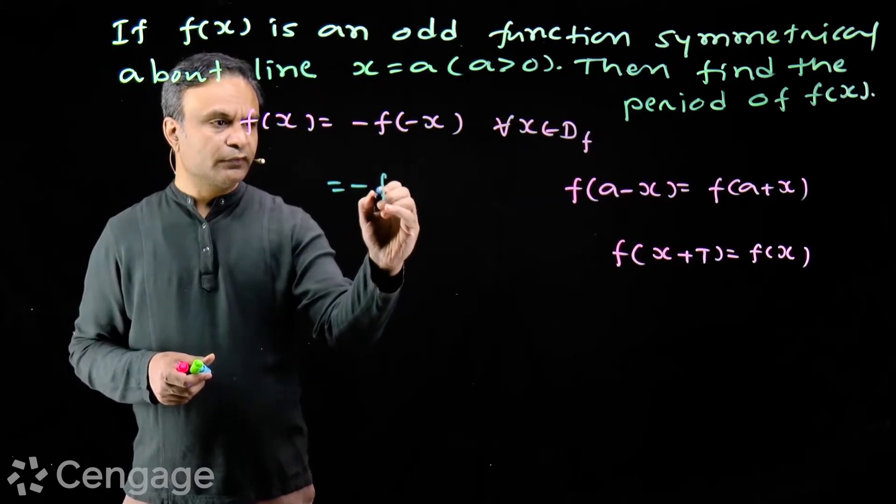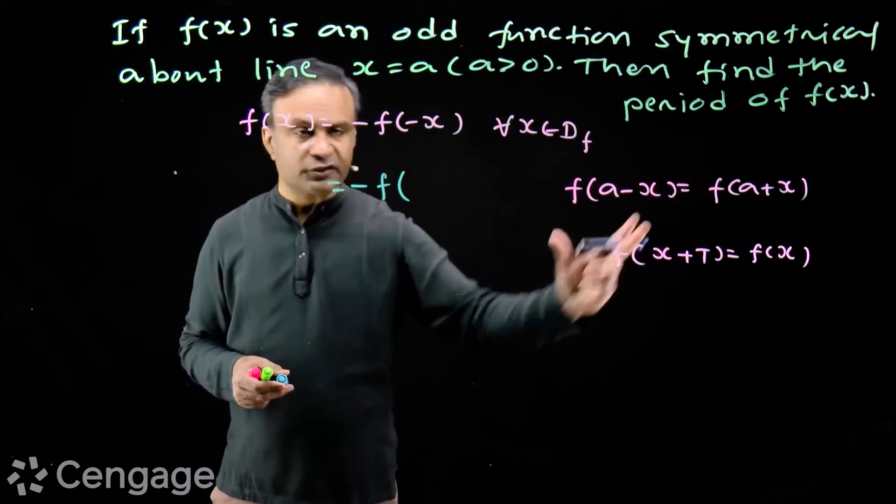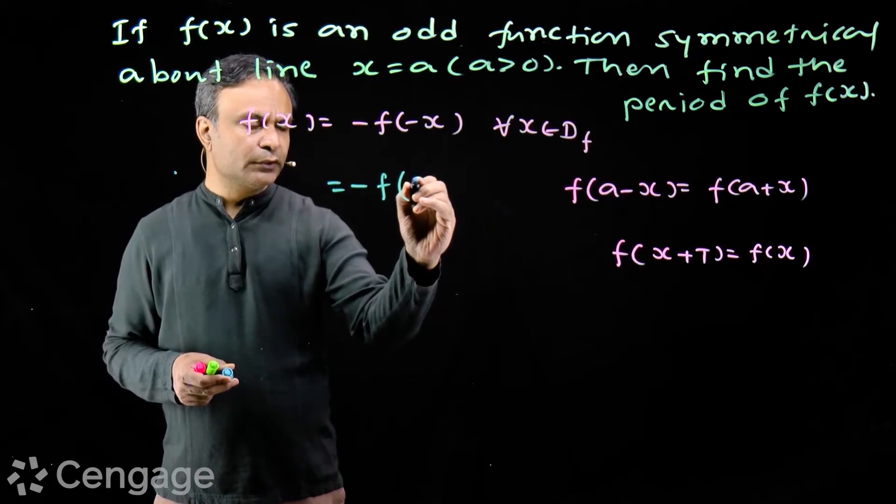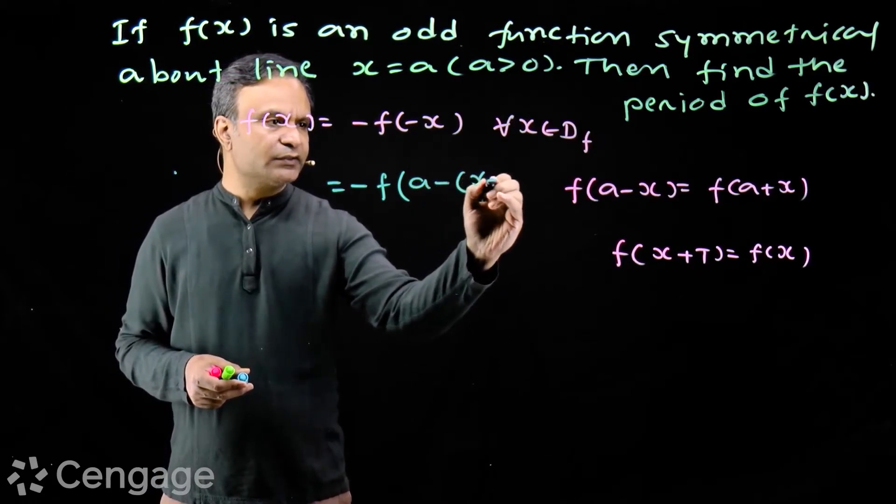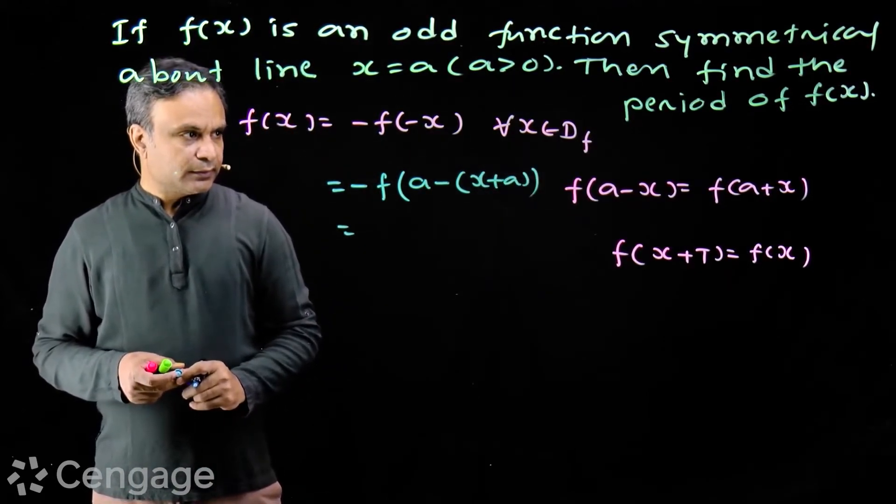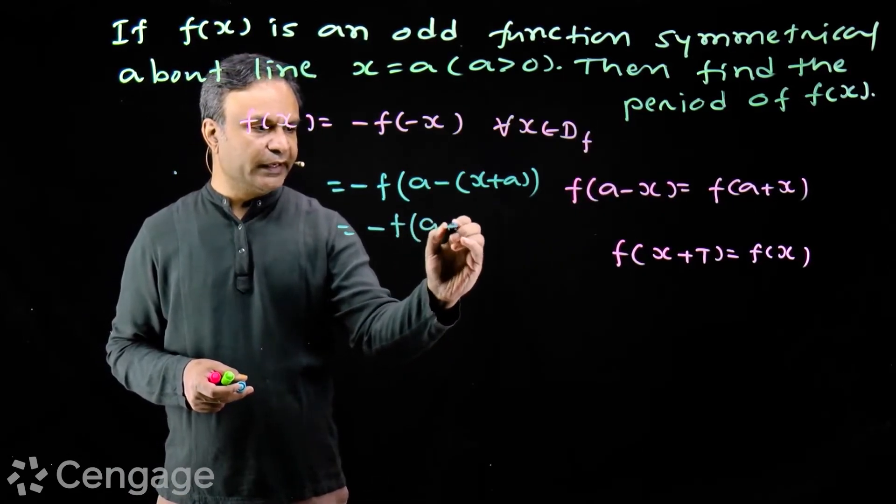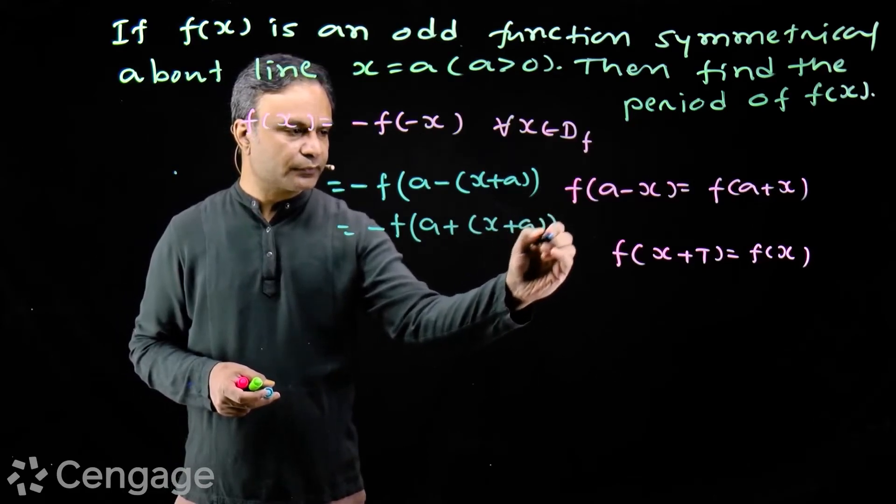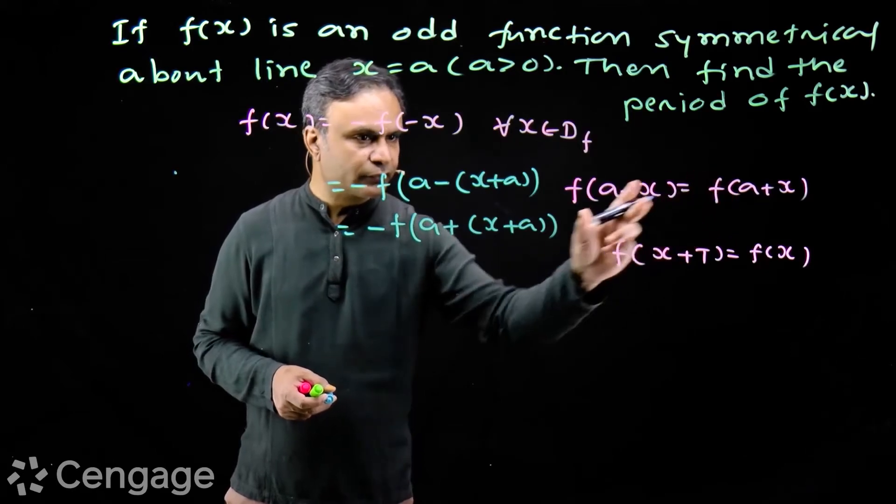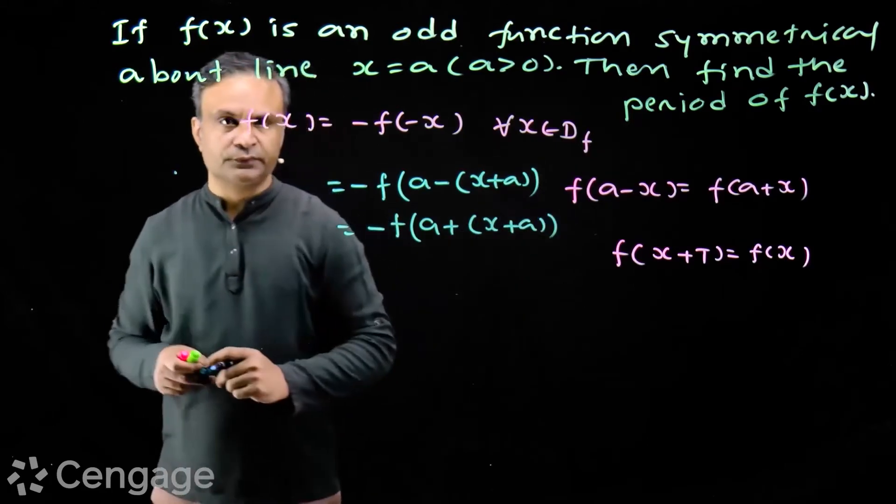Now we have to find period of the function. That means we have to prove that f(x+t) = f(x). We add and subtract a. We have to use these two equations. In this, we add and subtract a so we can use this equation. So we have -f(a - (x+a)). Now using this equation, this will be equal to f(a + (x+a)). We replace x by x+a.